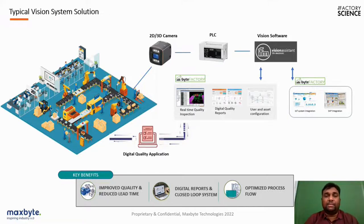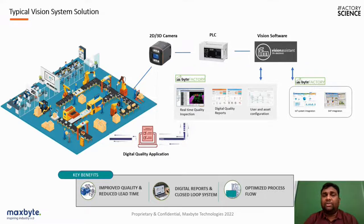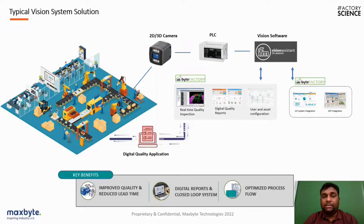This forms a complete closed-loop system — when a defective product is identified and eliminated from the line, data on why the rejection happened and how many times a part has been rejected from a particular line can all be captured. This data is used for improvement, optimizing production efficiency, and optimizing assembly lines. Key benefits include improved quality, reduced lead time, digital reports, a complete closed-loop system, and optimized process flow.